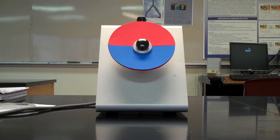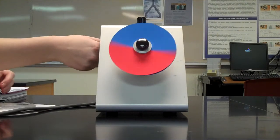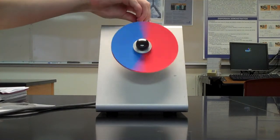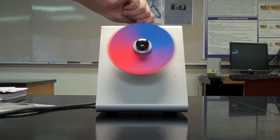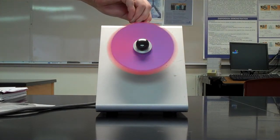First we're going to do equal proportions of red and blue. We're going to start it up. So as you can see, it creates a pretty basic purple color.